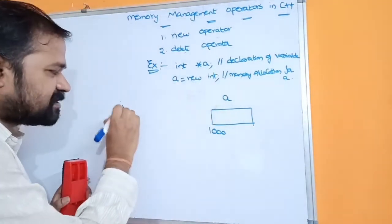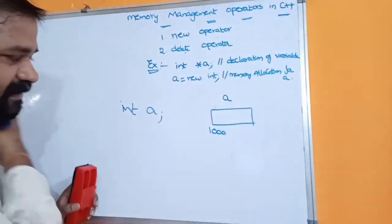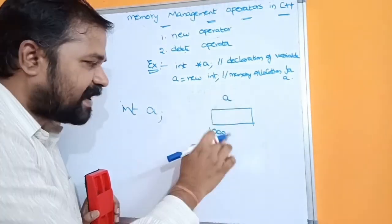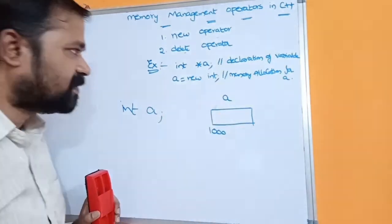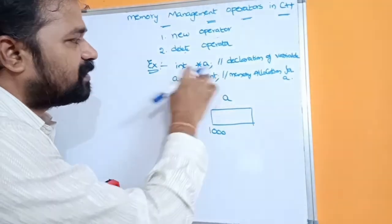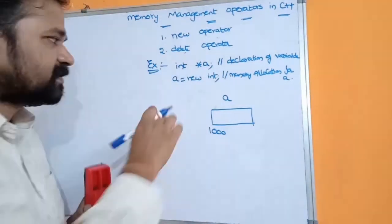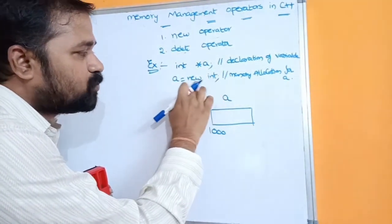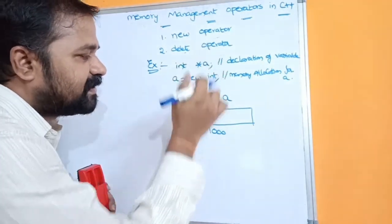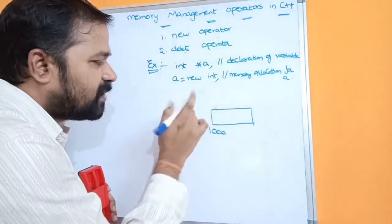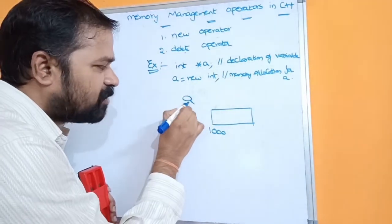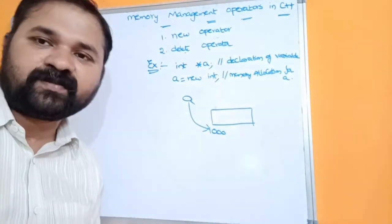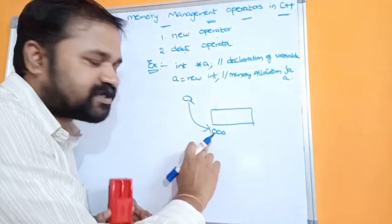The memory will be allocated only when the second statement is executed. This is not a normal variable. If you use a normal variable like int a, then declaration as well as memory allocation will be done simultaneously. Whereas for a pointer variable, memory will not be allocated during declaration — we have to explicitly allocate the memory. So, a = new int allocates memory for a and returns a pointer to the starting address.